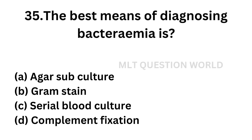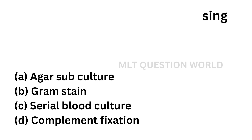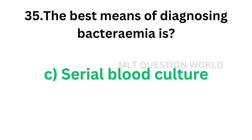Question number 35: The worst means of diagnosing bacteremia is — option A: agar subculture, option B: gram stain, option C: serial blood culture, option D: complement fixation. The correct answer is option C, serial blood culture. The worst means of diagnosing bacteremia is serial blood culture.